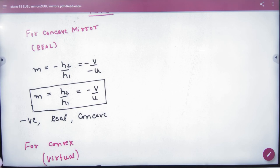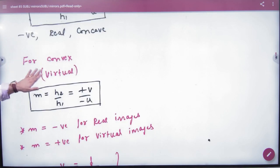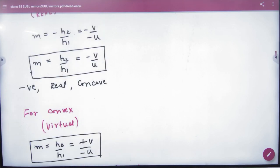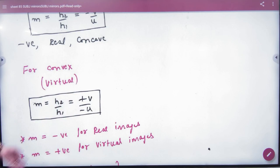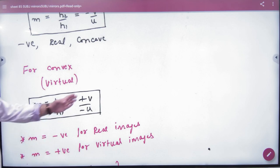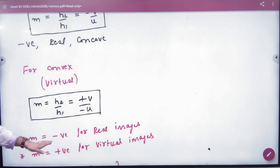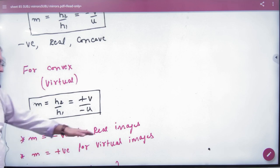Okay, so the first point is clear. In the convex case, what is your image? It is made virtual. And what will happen in the virtual case? H2 by H1, V by U, because in the convex case, the heights are both positive and the image and object will be on the other side. So the magnification is negative for real images, the magnification is positive for virtual images.